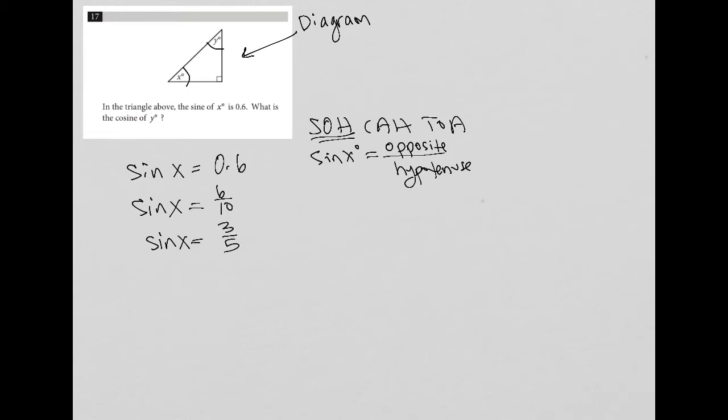Now that helps me with my diagram strategy because now I can label that the opposite side of the x is 3, and the hypotenuse of the right triangle must be 5.